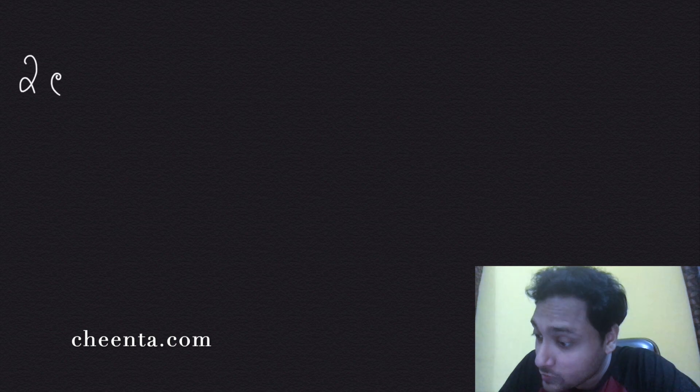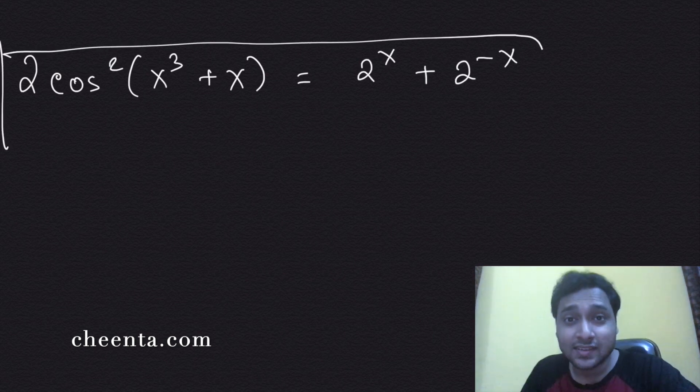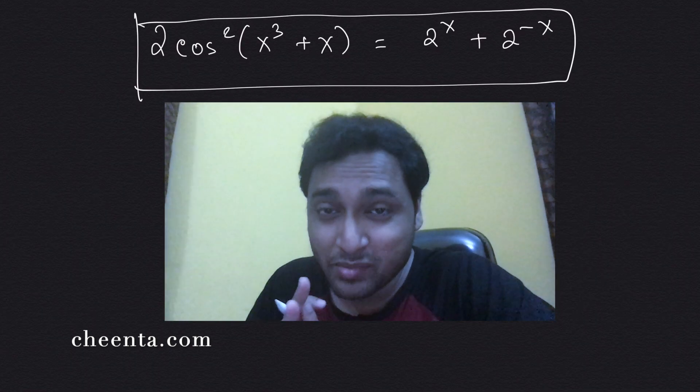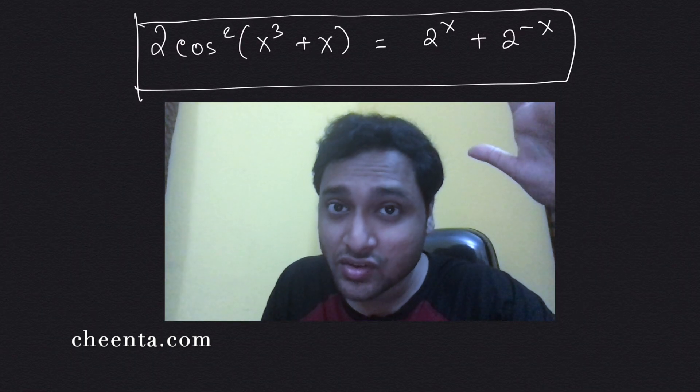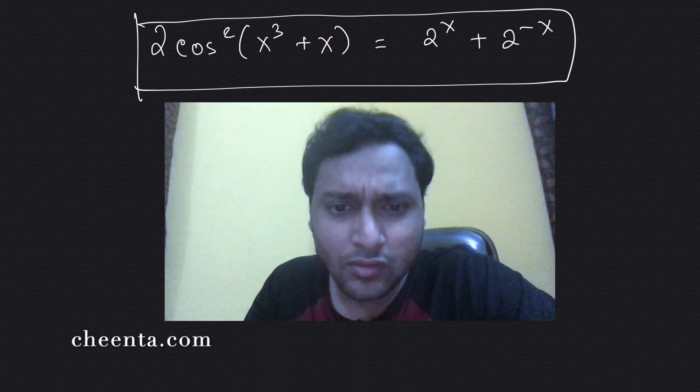So we have a very interesting equation here: 2 times cos squared (x³ + x) equals 2^x + 2^(-x). We want to solve this equation and it looks pretty terrible because one side is a trigonometric function, another side has an exponential function. So how do we go about that?